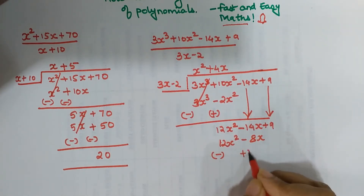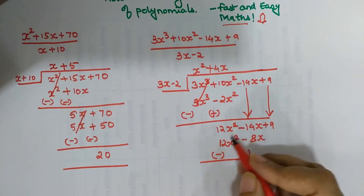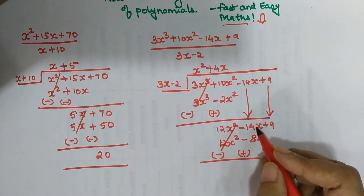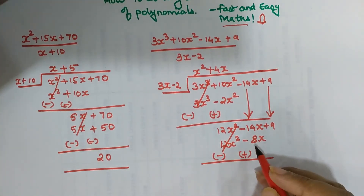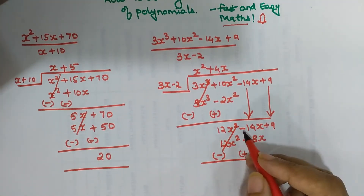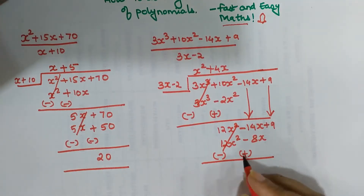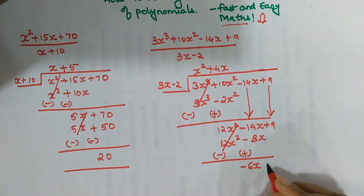And 4x multiplied by negative 2 gives minus 8x. The signs change: this term is cancelled, and minus 14x plus 8x gives minus 6x plus 9.